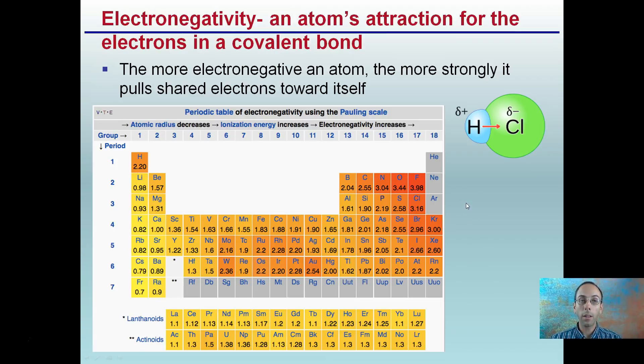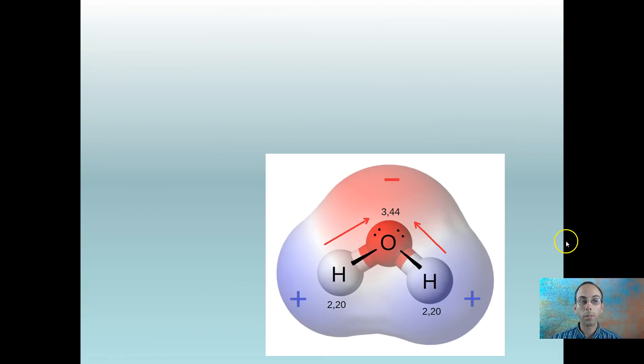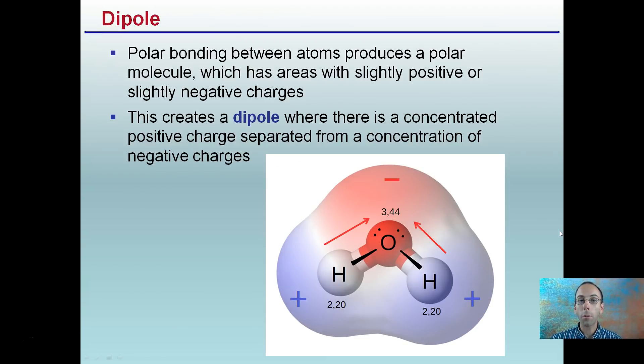Continuing on, this concept of electronegativity, it's an atom's attraction for the electrons of a covalent bond. The more electronegative an atom, the more strongly it pulls shared electrons towards itself. The most electronegative of atoms here is fluorine, and the least is francium. So we see this general trend as we work our way up and to the right, the greater electronegativity atoms are located here, and these are weaker. So it kind of gives you an idea of the trend within the periodic table. Now what's called a dipole is polar bonding between atoms produces a polar molecule, or polar's unequal sharing, which has areas with slightly positive or slightly negative charges. We see that here. Here's our oxygen, slightly negative, with our slightly positive charges here. This creates a dipole, where there's a concentrated positive charge separated from a concentrated negative charge.